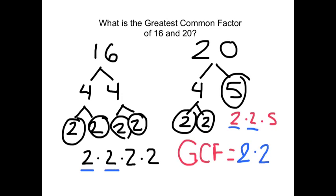and then I see that there's nothing else in common between the two prime factorizations. So, the GCF is 2 times 2, or 4. 4 is the largest number that goes into 16 and into 20.